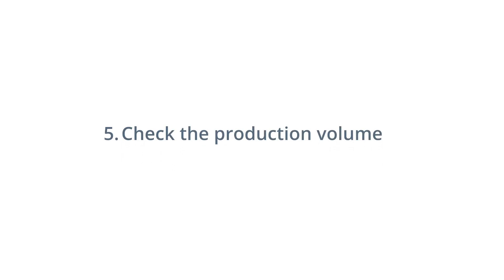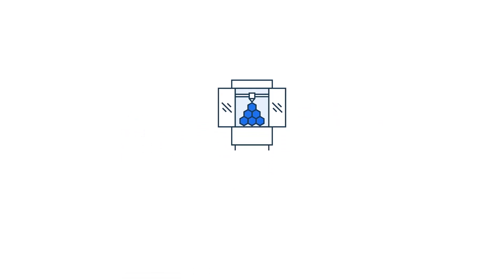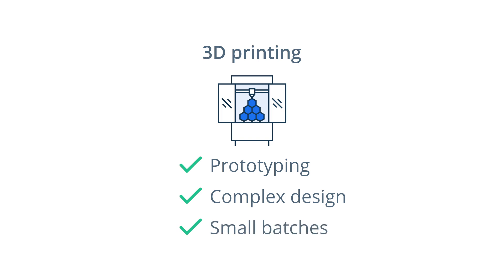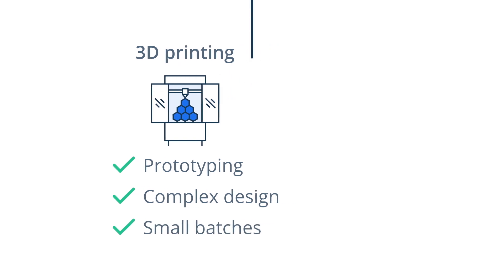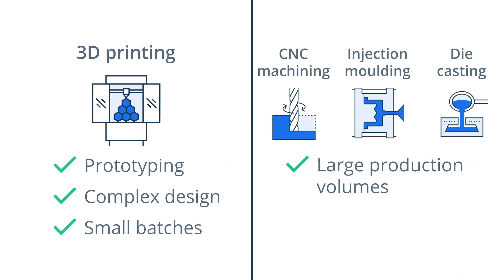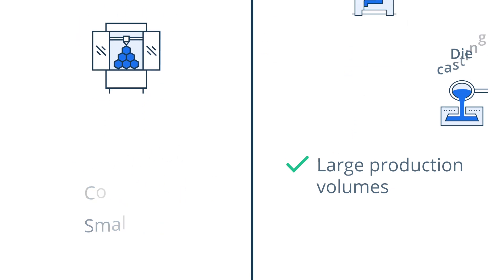Number five: check the production volume. Remember that 3D printing is the best option for manufacturing single units with complex designs, or for small batches. For large batches, consider using plastic CNC machining, injection molding, or metal die casting.